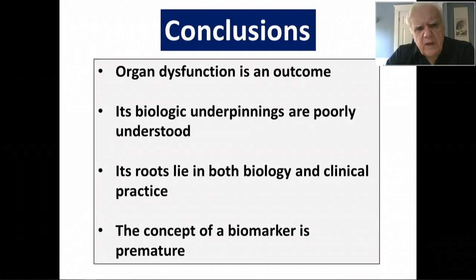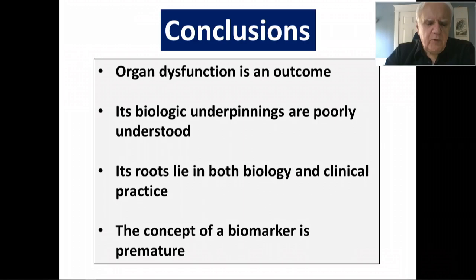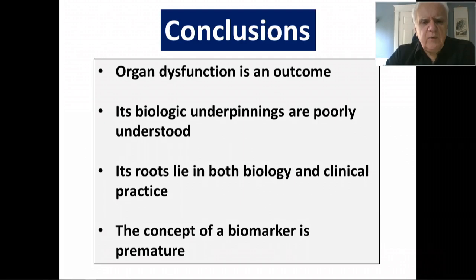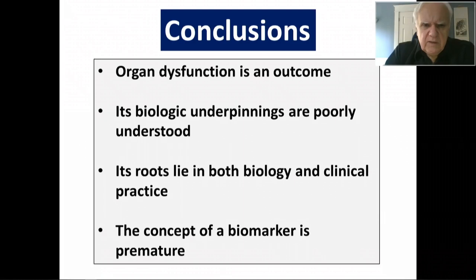To conclude: organ dysfunction in sepsis is an outcome. In thinking of a biomarker, we want not so much to predict that outcome, but to provide insight into the processes that lead to that outcome. This is difficult because the biological basis of organ dysfunction is complex and poorly understood. And beyond this, it lies not just in deranged biology, but also in variability in clinical practice that can exacerbate or at times improve the risk of developing organ dysfunction. When you put all of this together, the concept of having a biomarker of organ dysfunction in sepsis really is premature and begs the question: what exactly is the question we are trying to ask? Thanks very much for your attention.